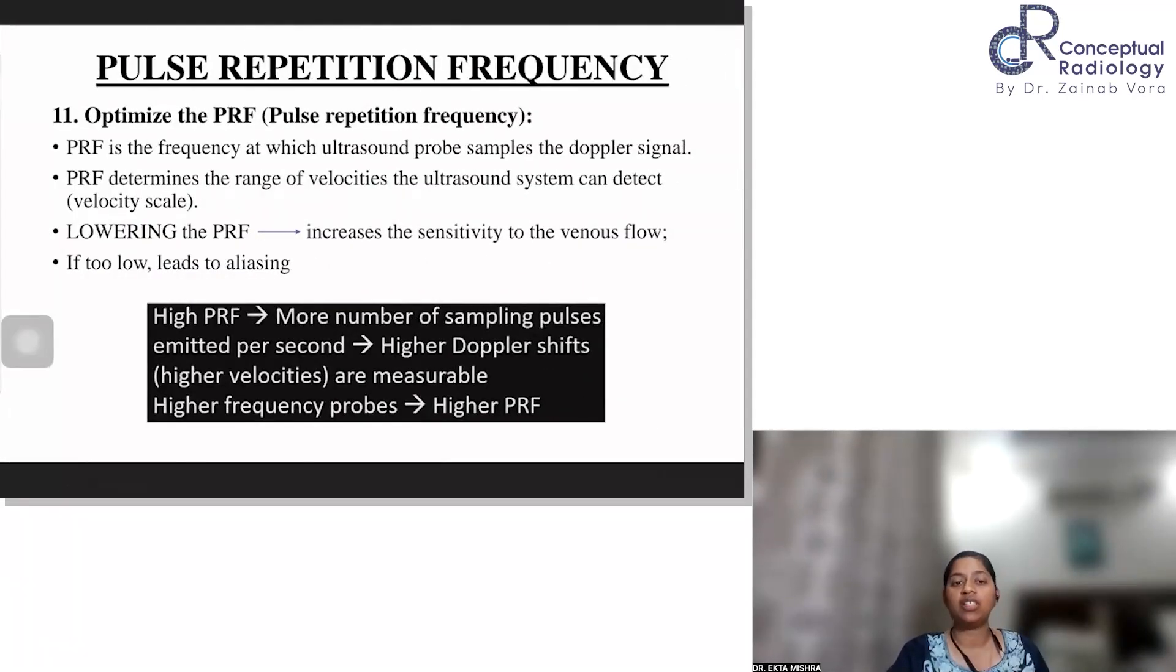Then PRF, what is PRF? PRF is the frequency at which the ultrasound probe is sampling the Doppler signal. So it is going to determine the range of velocities that your ultrasound system can detect. If you lower the PRF, you are going to increase the sensitivity to low flows like venous flow. But if the PRF is too low, then the sensitivity to low flow increases.